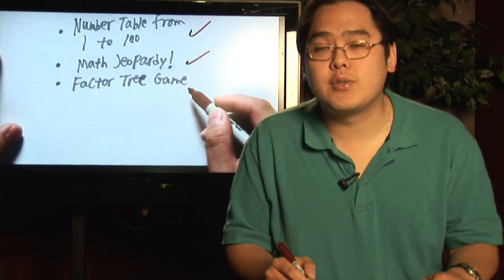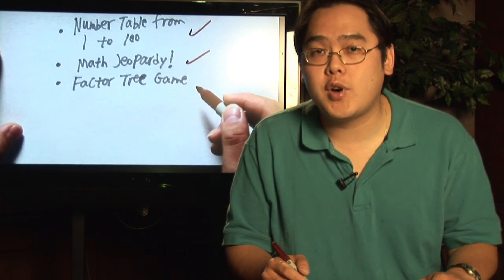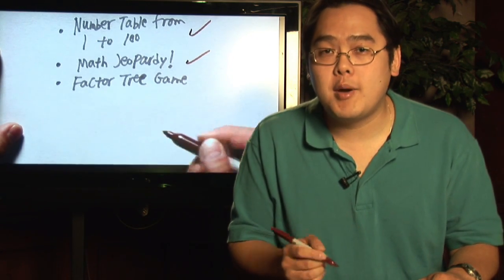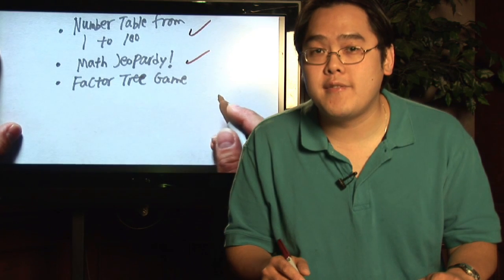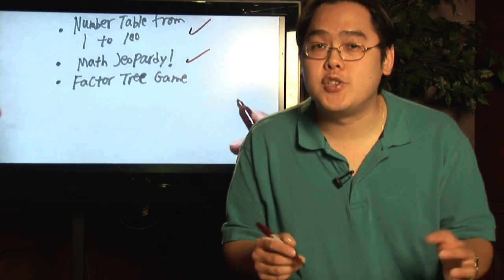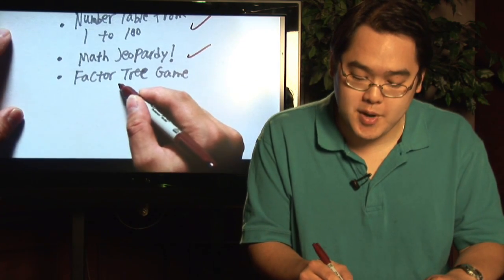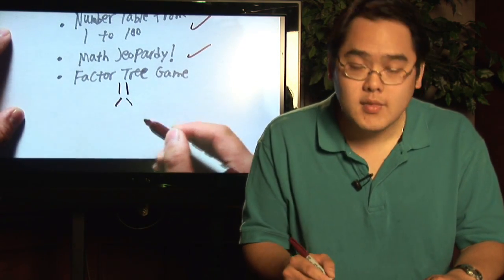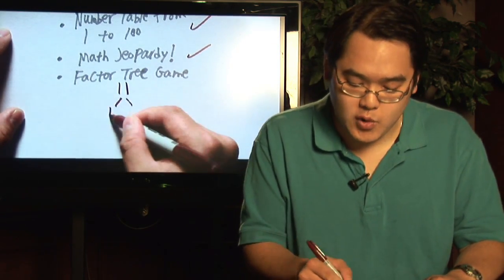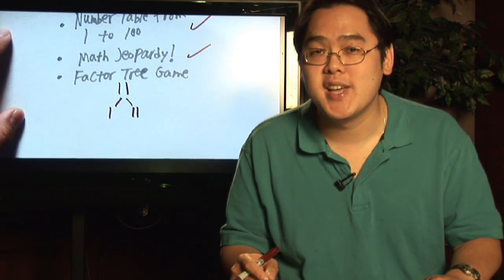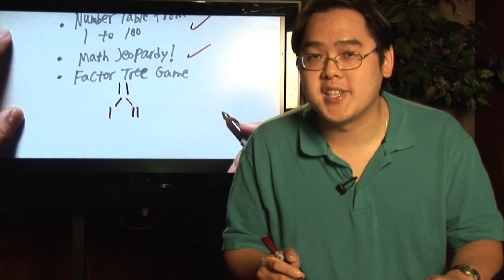Lastly, you can think about a factor tree game. If you have any number, have them build a tree. If they find that it only ends with two branches, then the number is a prime number. For example, if you have the number 11, the only branches from 11 are 1 and 11, so the tree ends and they'll know that's an example of a prime number.